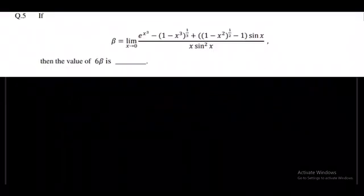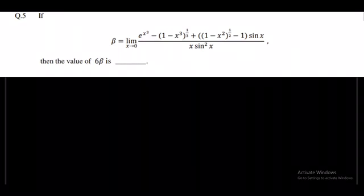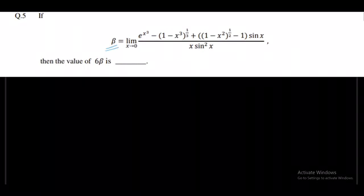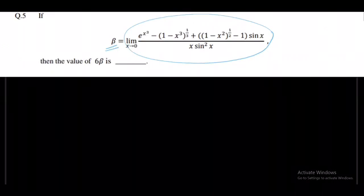So here is the question that I will be solving. The question says: if beta is equal to the limit as x tends to 0 of [e raised to the power x³ minus (1 minus x³)^(1/3) plus (1 minus x²)^(1/2) minus 1] times sin x, whole divided by x times sin²x, then find the value of 6 beta. Basically we need to evaluate this limit first, after which 6 beta can easily be calculated.